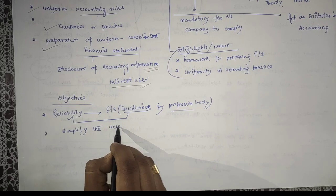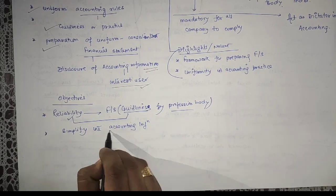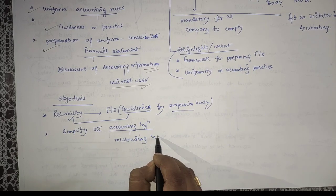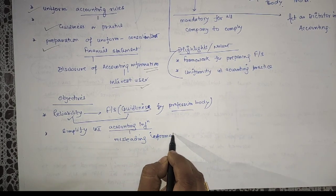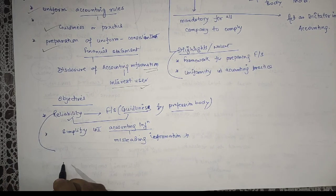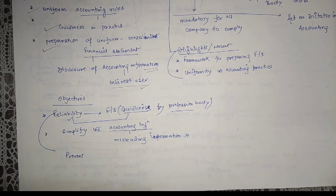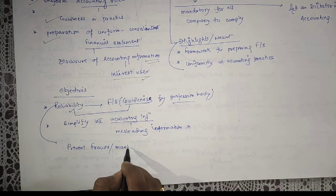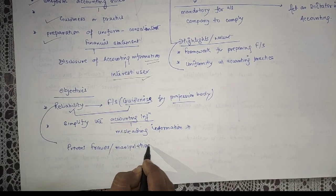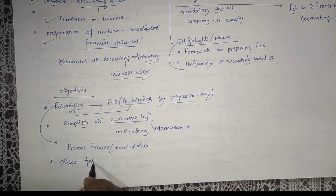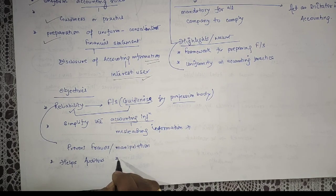Secondly, accounting standards simplify accounting information. Misleading information will be deleted or overtaken. Thirdly, they prevent frauds and manipulations. They also help the auditor.